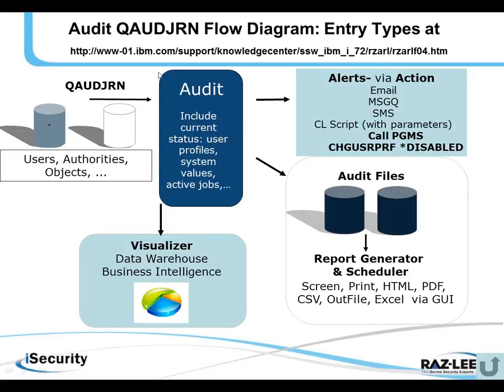From these two sources, we provide outputs in three areas. Number one, a GUI-based visualizer product which performs business intelligence on the log files that have been produced — it's great for pinpointing very particular situations. Number two, we can send out alerts based upon all that has happened. The alerts are sent as emails, message queues, smartphone text messages, CL scripts, etc.